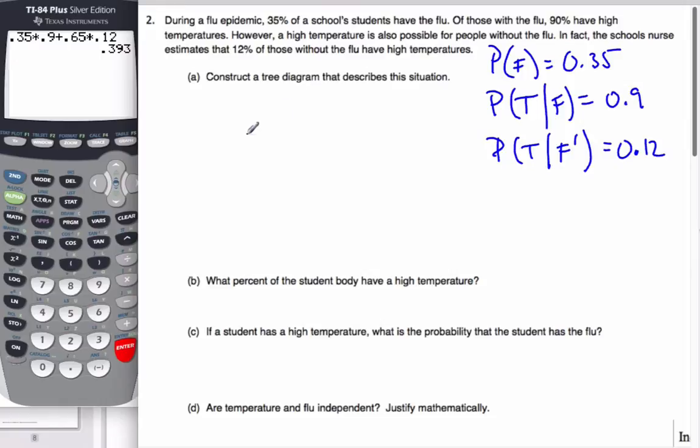So now I'm going to make a tree diagram for this situation. I'm going to start off with I could have the flu or I do not have the flu. And so this is 0.35, hence this is 0.65. Now, if I have the flu, I could have a temperature with the flu, or I do not have a temperature and still have the flu. This is 0.9, which makes this 0.1.